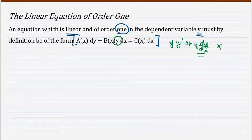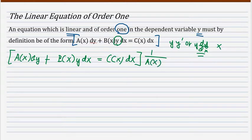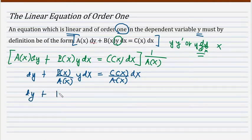Now let us focus on the definition: A(x)dy + B(x)y dx = C(x)dx. If I divide the differential equation by A(x), then I will have dy + [B(x)/A(x)]y dx = [C(x)/A(x)]dx. The quotient B(x)/A(x), let us name that as P(x).